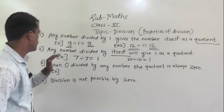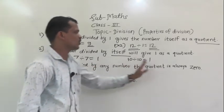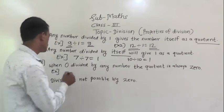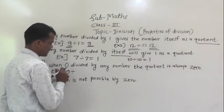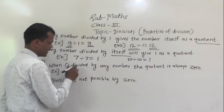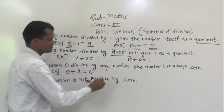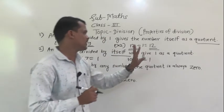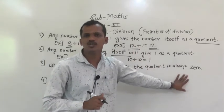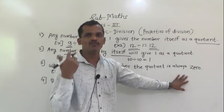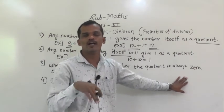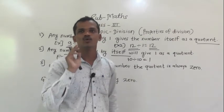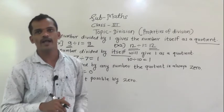Next property: when 0 is divided by any number, the quotient is always 0. Here, 0 divided by 2 gives 0 as the quotient. You can take any example — 0 divided by 5 is equal to 0, 0 divided by 9 is equal to 0. So, 0 divided by any number gives a quotient of always 0.